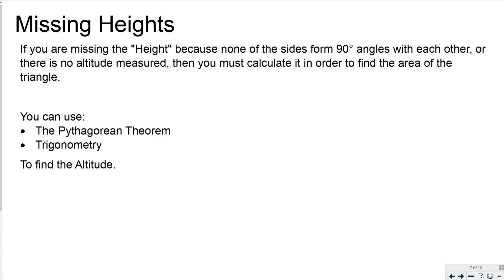If you are missing a height because none of the sides form 90 degree angles with each other, or no altitude is measured, you can calculate it to find the area. You can do this in a variety of ways: use trigonometry if you know an angle, or use the Pythagorean theorem — since a 90 degree angle is involved it makes a right triangle, allowing you to calculate the missing side.